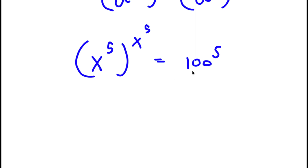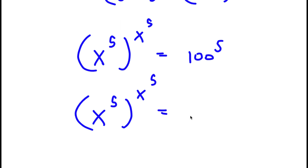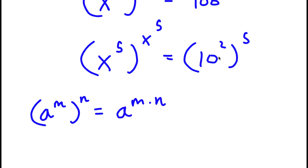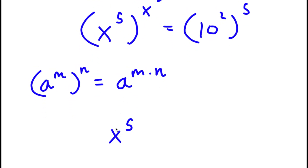Now 100 here is the same thing as 10 to the power of 2. So now I have x to the power of 5 to the power of x to the power of 5, equal to 10 to the power of 2 to the power of 5. If I have something in the form a to the power of m to the power of n, this is equal to a to the power of m times n. So 10 to the power of 2 to the power of 5 equals 10 to the power of 2 times 5, which is 10 to the power of 10. So I have x to the power of 5 to the power of x to the power of 5, equal to 10 to the power of 10.